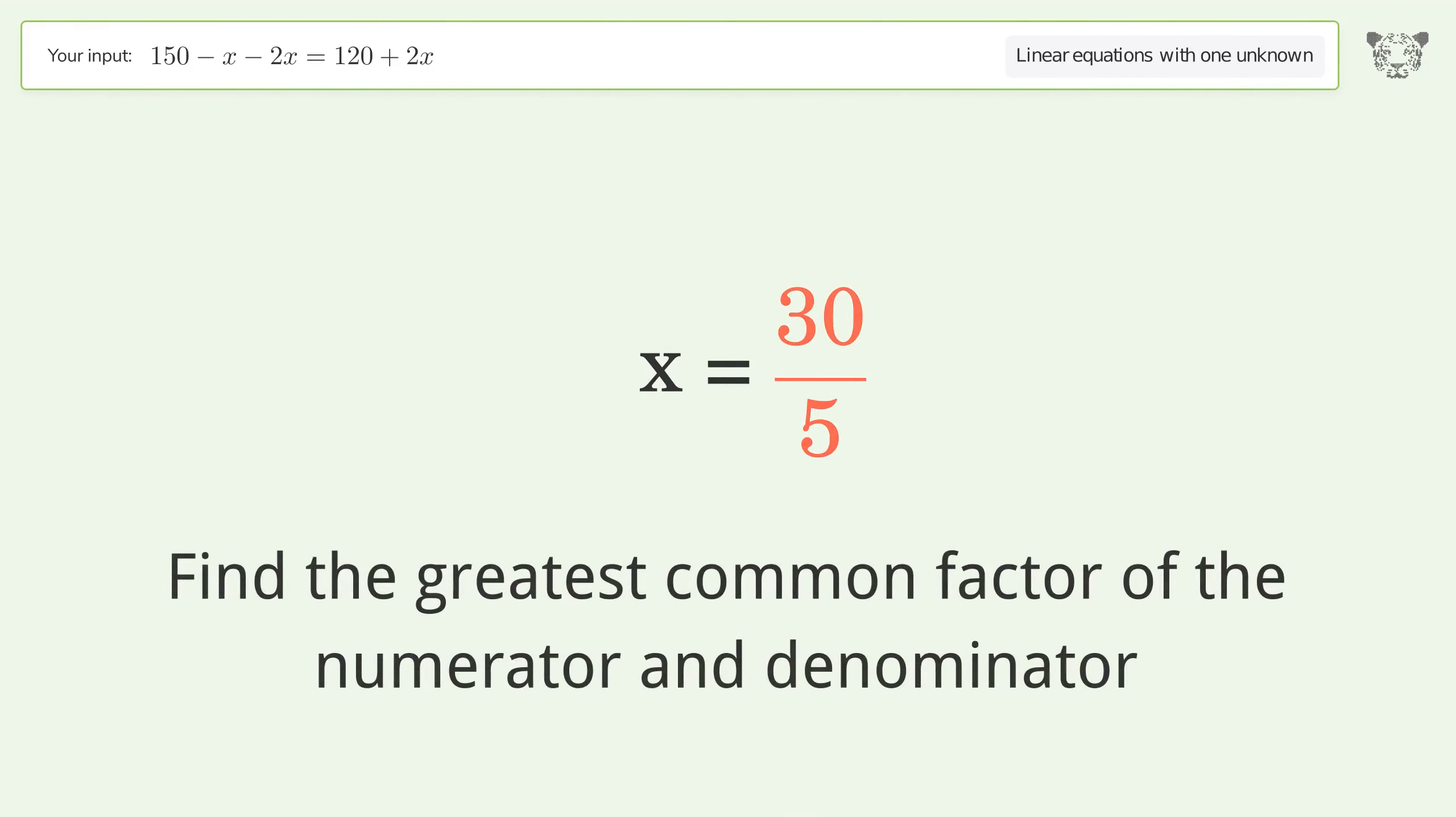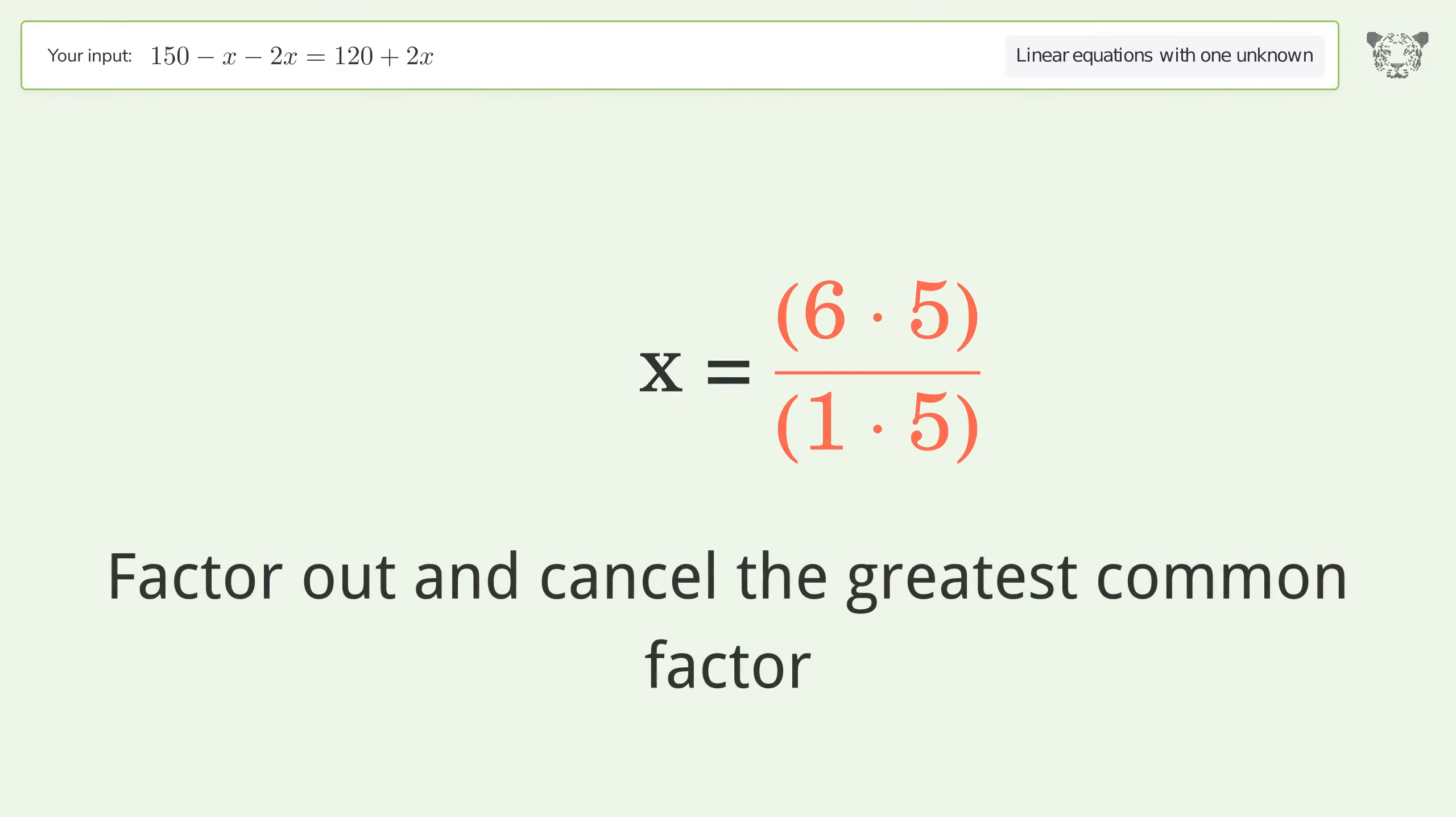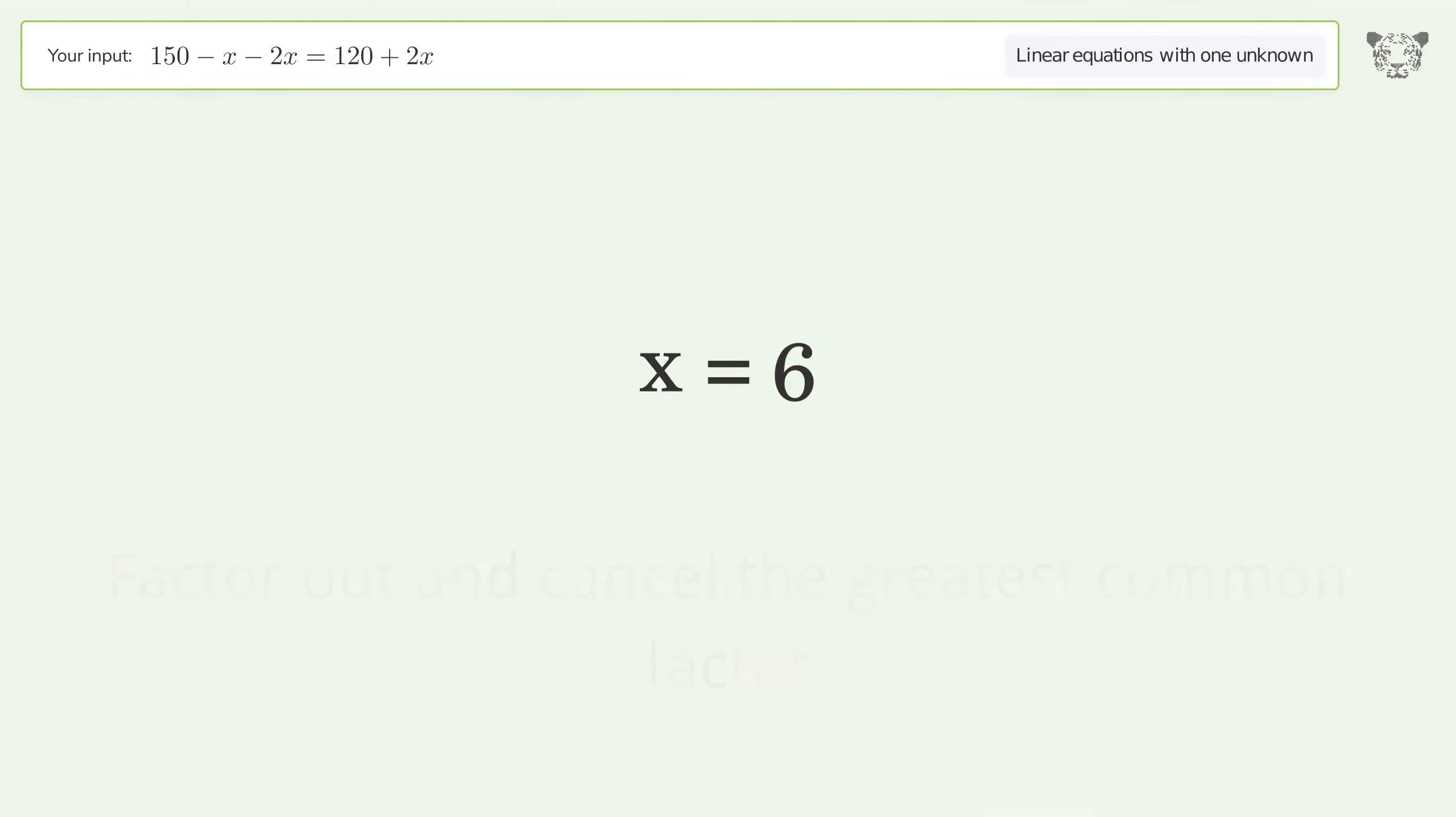Find the greatest common factor of the numerator and denominator. Factor out and cancel the greatest common factor. The final result is x equals 6.